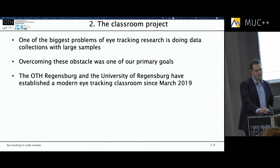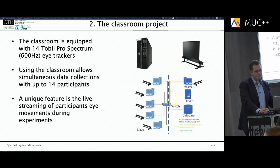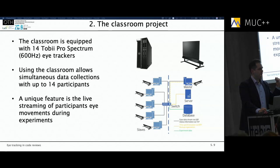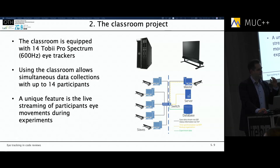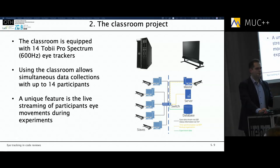The classroom is operated by the University and the OTH, and we have equipped it with top-of-the-line eye trackers produced by Tobii. We are using 14 Tobii Spectrum 600 Hz eye trackers — this means if you are sitting in front of the eye tracker and reading something, it records 600 pictures per second, allowing you to track even the smallest eye movements including micro-saccadic analysis. We can use all 14 eye trackers simultaneously for larger sample data collections, which speeds up the whole process considerably.